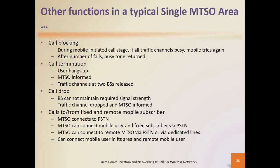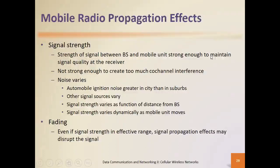Signaling is the next topic to look at, because mobile radio propagation has challenges. We'll look at fading and signal strength, interferences, and call drops. Signal strength of base stations and mobile units needs to be strong enough to maintain signal quality at various receiving units. If you don't have good signal strength, mobile units and base stations will have challenges trying to maintain signal quality for transmission.